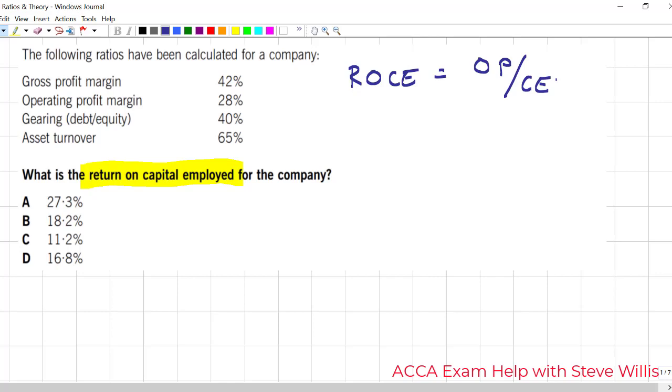Now we have some other information here. We know the gross profit margin, the gross margin, and we know that that is the gross profit over the sales, and that would be 42 over 100. We know the operating profit margin, that's always going to be the operating profit over the sales, and that is 28 over 100.